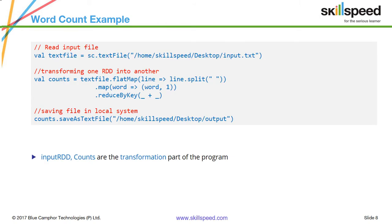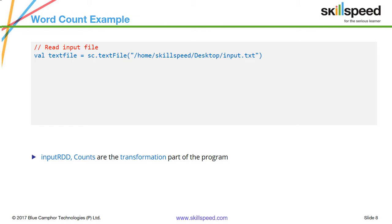Here is the Spark Scala code for the word count example. If you look at the code it is almost self-explanatory, but we will look at each piece of code and understand what it does. The first line is basically how you read your input file. I'm creating an RDD called textFile — val textFile — then using sc.textFile method to read input.txt from my local file system.